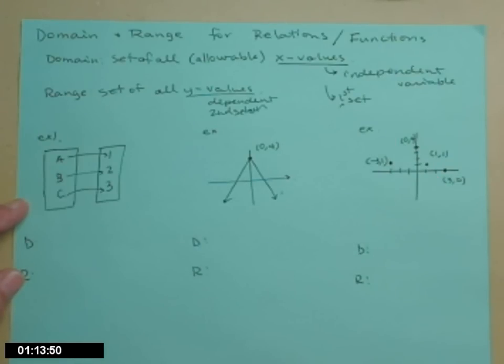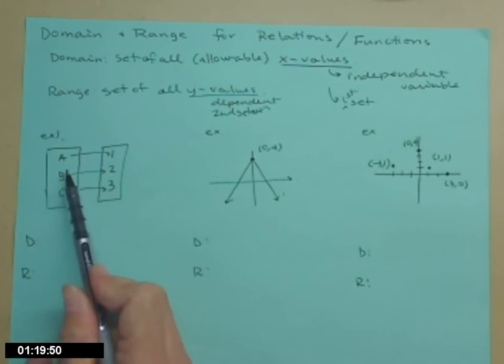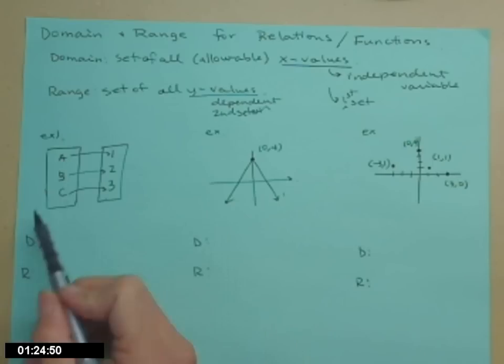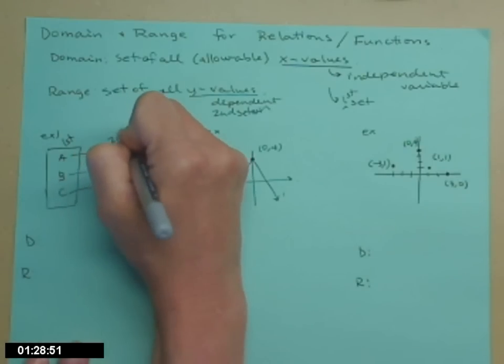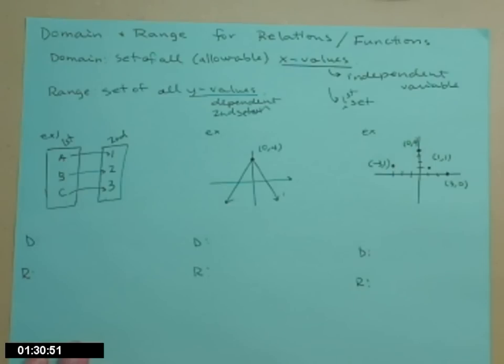So I have three examples here. They are sets, so we will use set notation. So for the first set, I'm mapping a to 1, b to 2, and c to 3. So this is my first set.